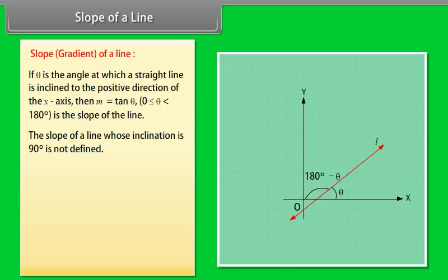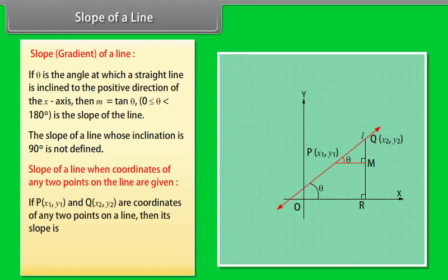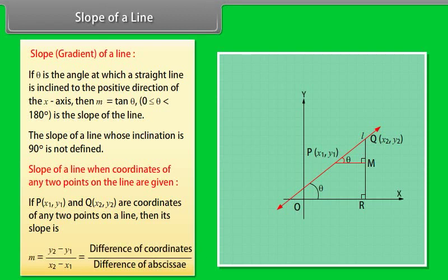Slope of a line when coordinates of any two points on the line are given: If P(X1, Y1) and Q(X2, Y2) are coordinates of any two points on a line, then its slope is M equals (Y2 minus Y1) by (X2 minus X1), which equals the difference of ordinates by difference of abscissae.